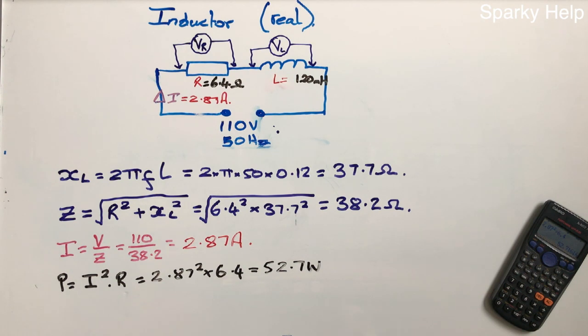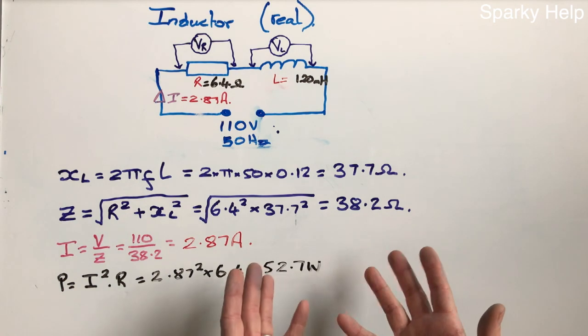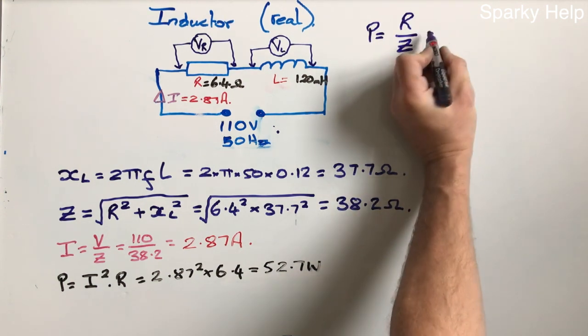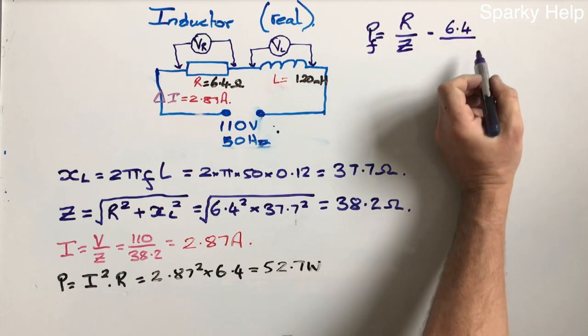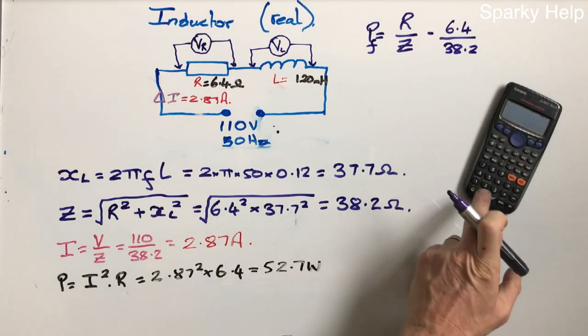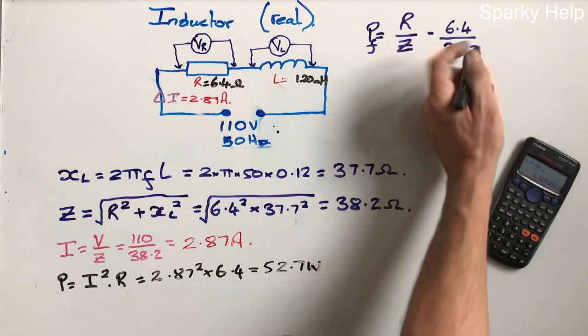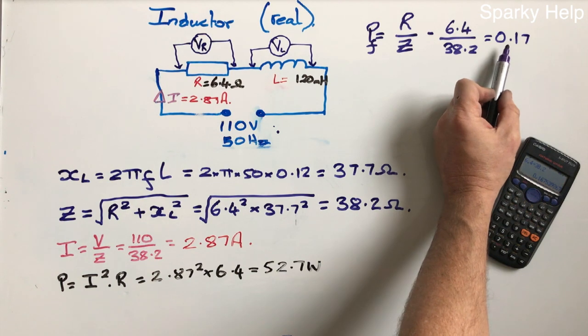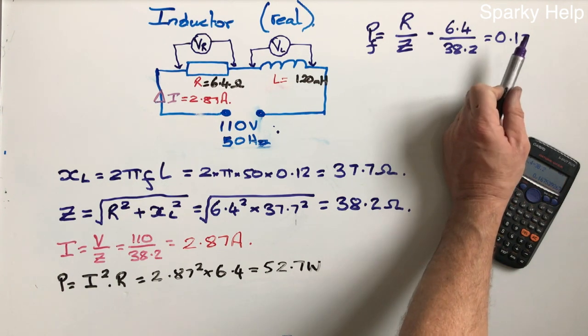Now there are lots of other things we can calculate from this as well, because we can work out what the power factor for this circuit is. Power factor is the relationship between the voltage and current, how far out of phase they are. So power factor is R over Z. R is 6.4 divided by Z, which is 38.2. If we do that as a calculation, 0.16, let's round it up to 0.17. Now power factor is always a number one or less, and ideally what you're looking for is a number of one in a power factor. So this is a bad power factor for this particular circuit, 0.17 bad factor. It means they are completely out of phase.